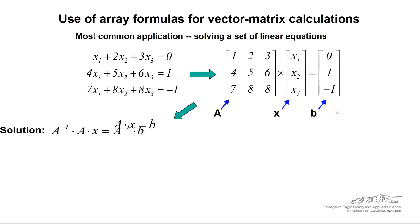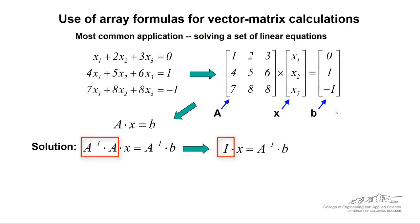Now if we use some matrix math here, we can take the inverse of A and multiply that by both sides. When we take the inverse of A times A, that's just the identity matrix, which is essentially just one. And so in the end, we get x equals A inverse times b.